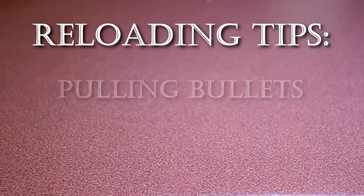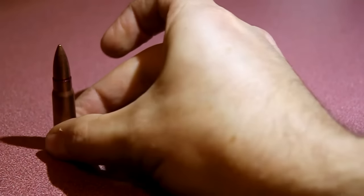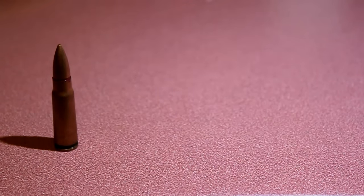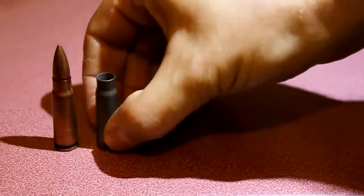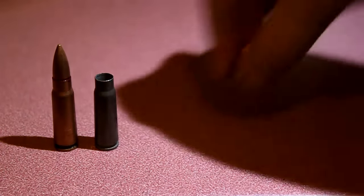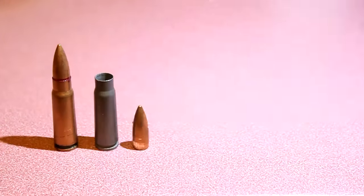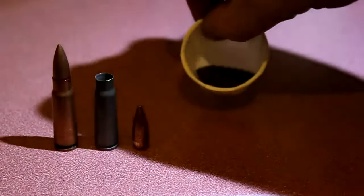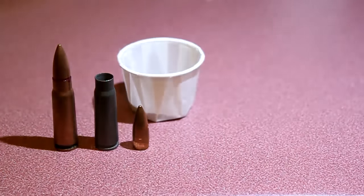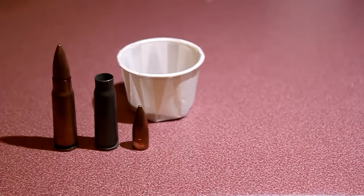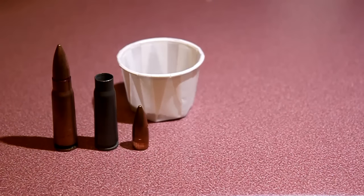Basically bullet pulling is when you take a fully assembled round and you break it down into your components, so we've got the case, the bullet, and the powder. Depending on the method used, the components may or may not be reusable.